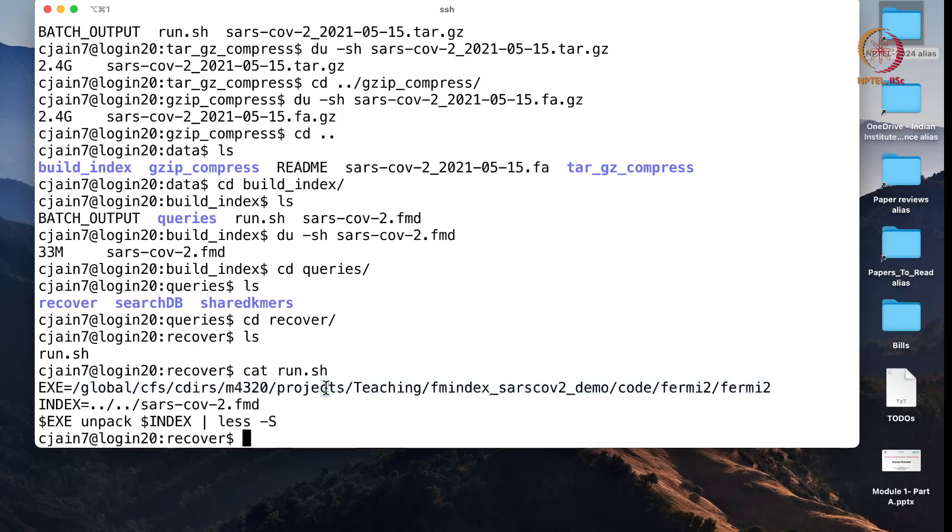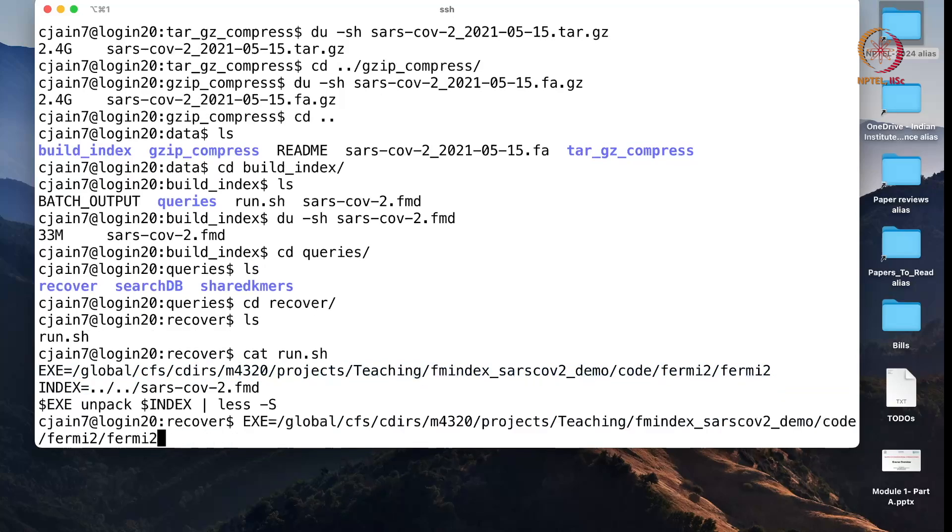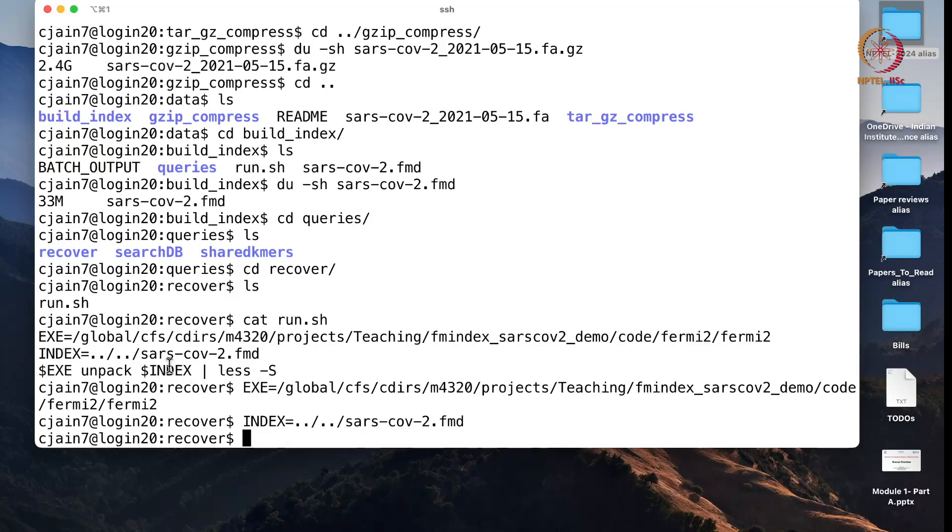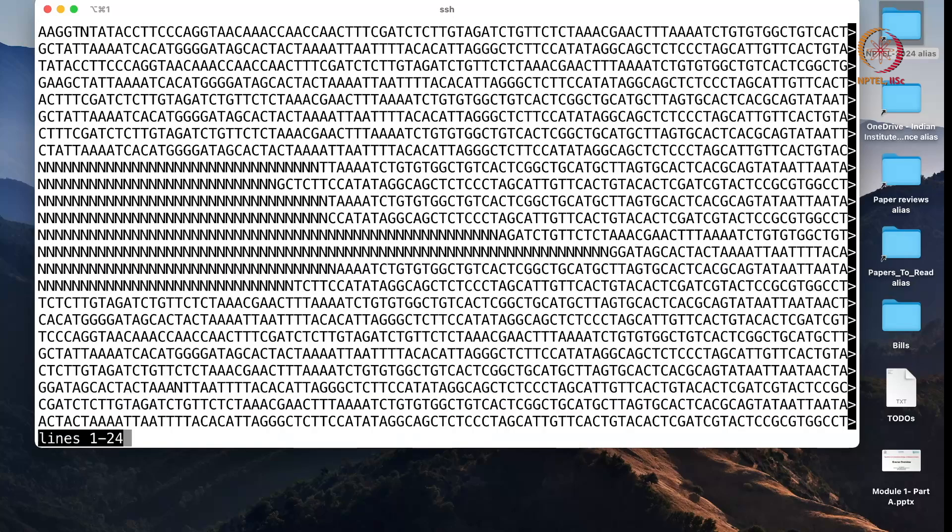So if I want to recover back the genome sequences from this small index, what I can do is I can run an open source tool called Fermi 2. I can check the index file and I can use the command unpack on top of this index to see the individual genome sequences.